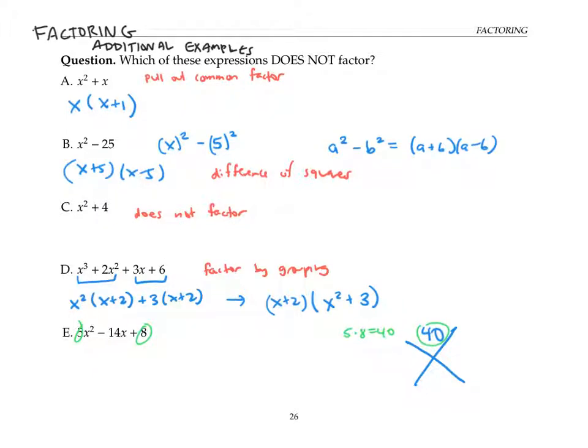Now I take the coefficient of the x term, that's negative 14, and I write that on the bottom part of the x.